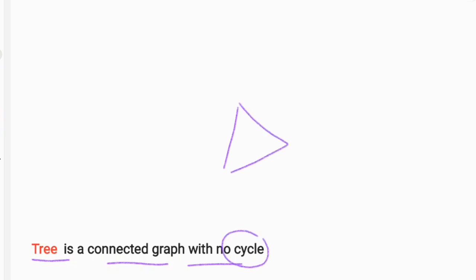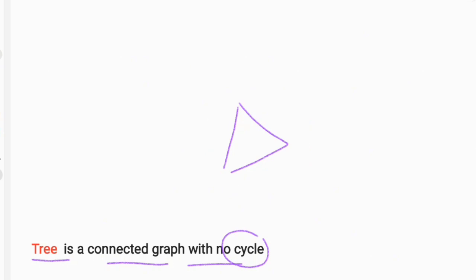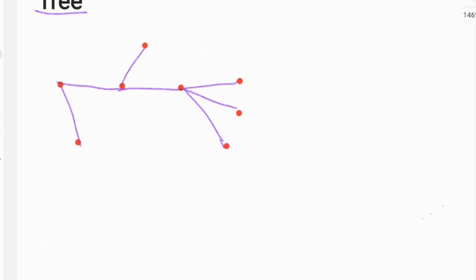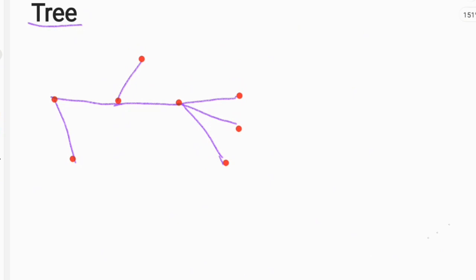Basically, we have a closed path. We have a regularity graph, and we have a connected graph. A tree is a connected graph with no cycle.